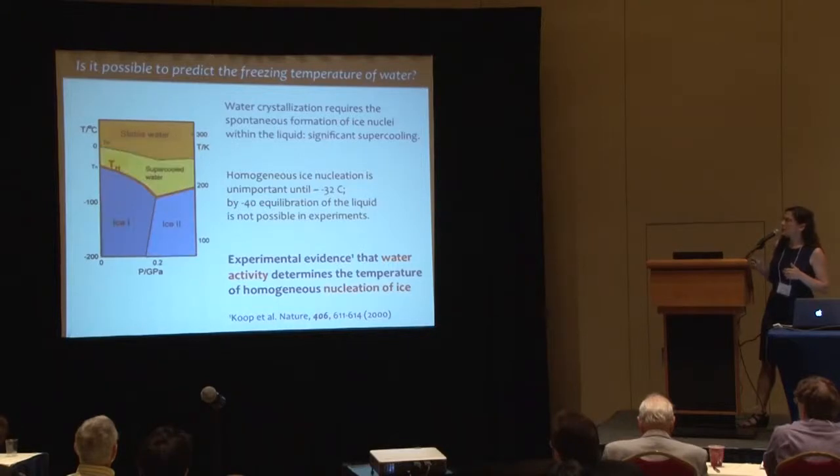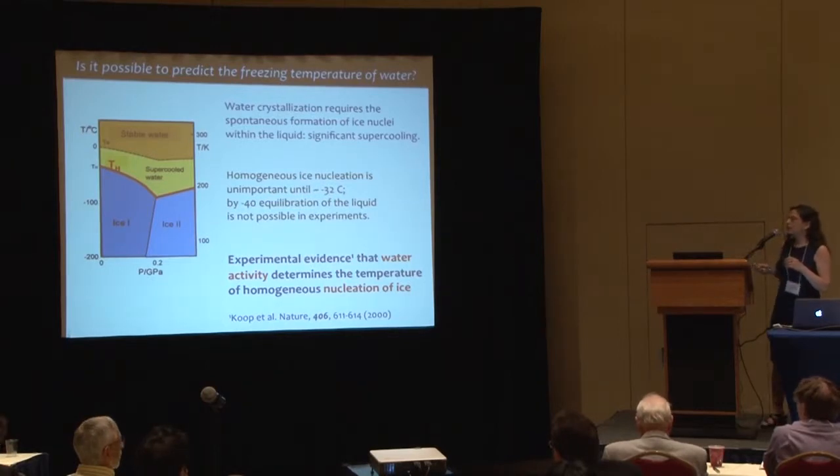Although the stable water limit is at zero centigrade at room pressure, we have to cool down significantly to have homogeneous nucleation — nucleation without the assistance of any surface. By about minus 32 centigrade you can start seeing some homogeneous nucleation, but it's very low. By minus 40 centigrade, the crystallization rate is so fast it cannot be measured in experiments. There is a very steep function of temperature on the cooling rate, and this defines the non-equilibrium homogeneous nucleation temperature TH, shown here in red.